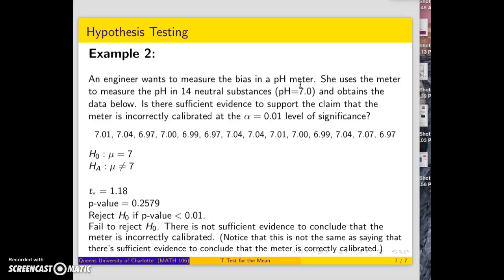Our alpha level is 0.01, so our rejection rule is to reject H₀ if p-value < 0.01. Therefore, we fail to reject H₀. There is not sufficient evidence to conclude that the meter is incorrectly calibrated.